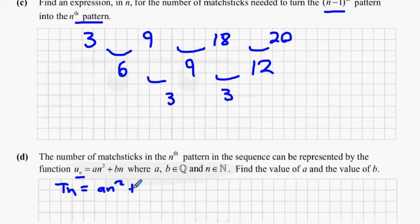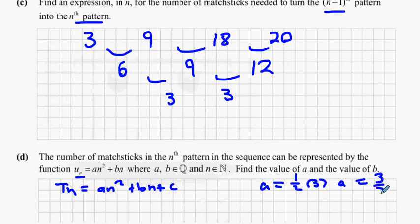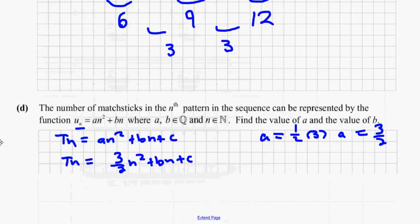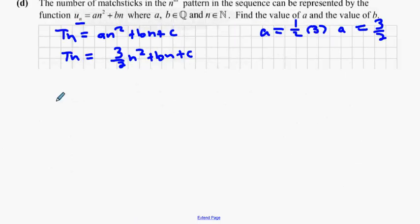The a value is half the second difference, so a equals three over two. The Tn formula is three over two n squared plus bn plus c. Our sequence is t1 equals three, t2 equals nine, t3 equals eighteen, t4 equals thirty. We'll start with t1: three over two times one squared plus b times one plus c equals three.